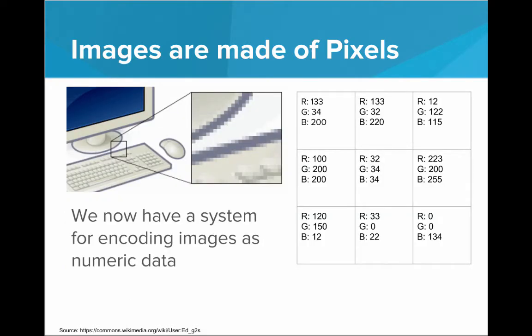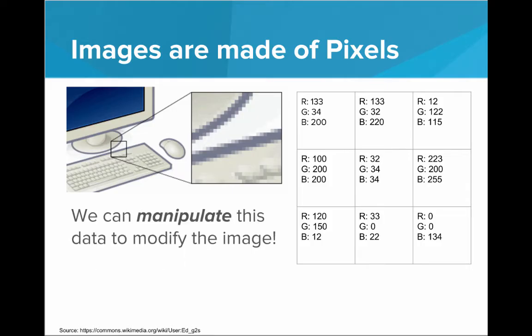We now have a system for encoding images as numeric data. We have a way to represent any image we want as just a series of simple numbers. And what's awesome is that we can manipulate those numbers to modify the image. This is what's so great about representing information in a digital form - it becomes very easy to use programs to tweak those numbers to modify the data, and we get a brand new image, a brand new result.